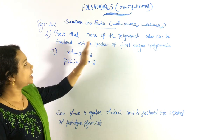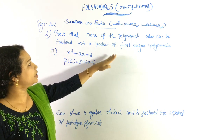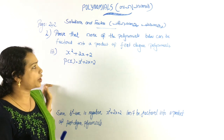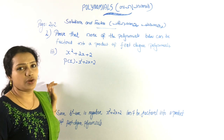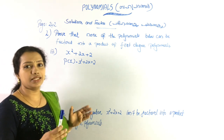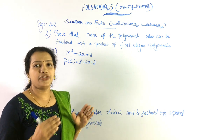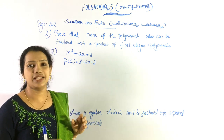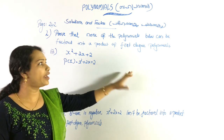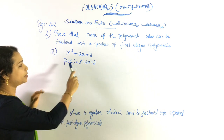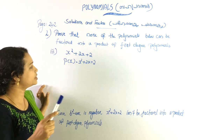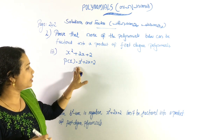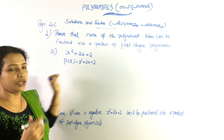We will determine whether the polynomials below can be factored into a product of first-degree polynomials. For the first polynomial, we have x² + 2x + 2 = 0.